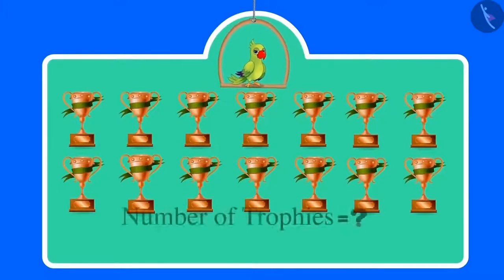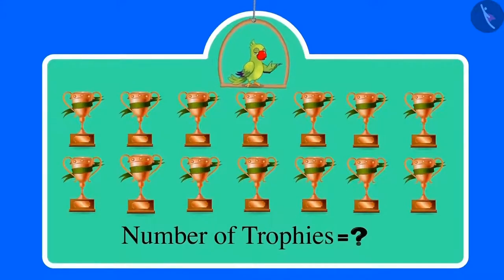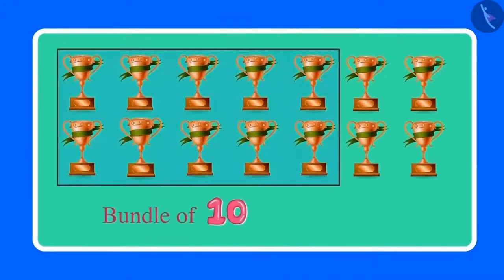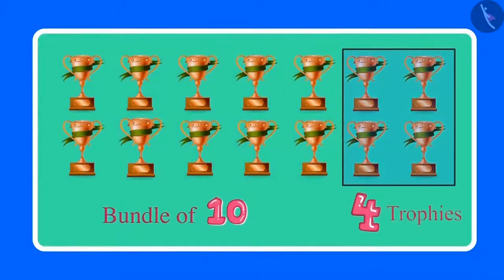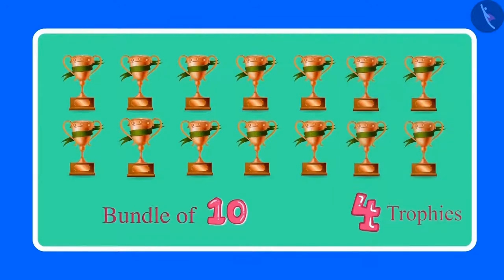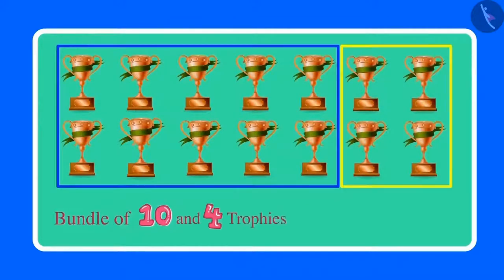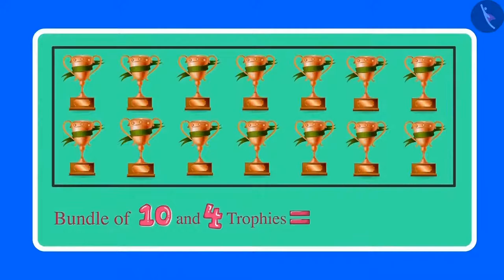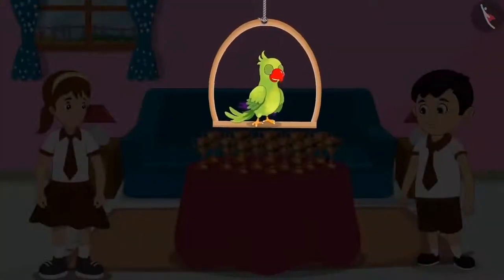So children, can you tell me how many trophies Chotu has? Come on, let us count together. These are 10 trophies and we can make one bundle of 10 trophies. Apart from this, there are 4 more trophies. This means that Chotu has one bundle of 10 and 4 more trophies — that is 14 trophies in total. Did you have the same answer? Very good.